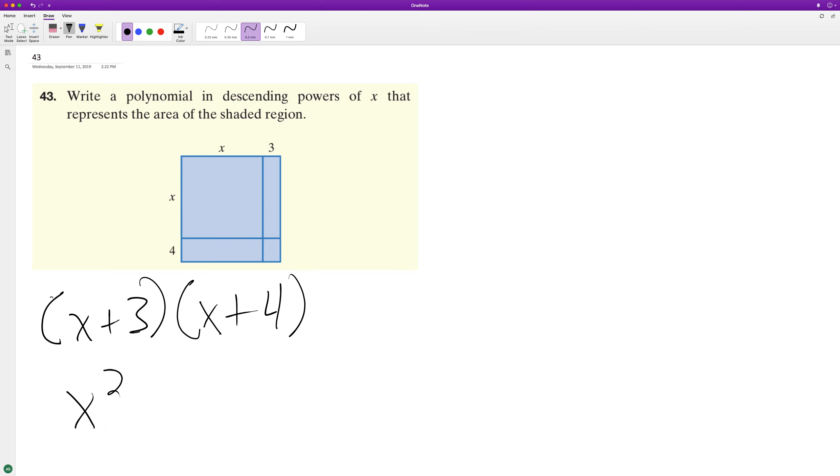FOIL this, so it's going to be x squared plus 4x plus 3x plus 12. Combining like terms, we'll